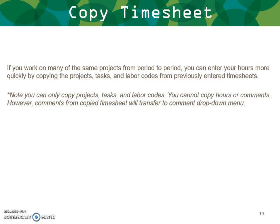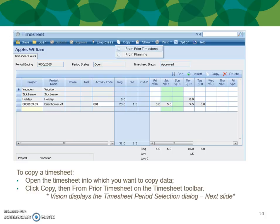If you work on many of the same projects from period to period, you can enter your hours more quickly by copying the project tasks and labor codes from previously entered timesheets. Note: you can only copy project tasks and labor codes — you cannot copy the hours or the comments. However, comments from copied timesheets will transfer to the comment drop-down menu.